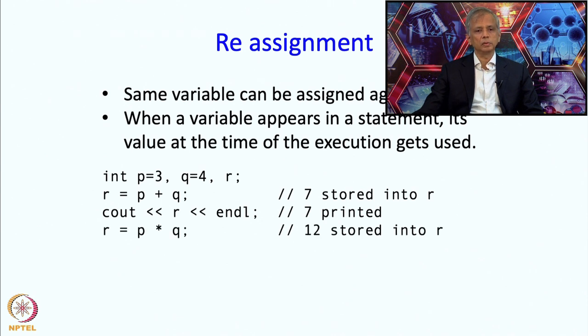Now suppose I use r, I write r equals p times q. Then the current values of p and q will be used and 12 will get stored into r. Now if I print out r, the current value of r which is 12 will get printed.